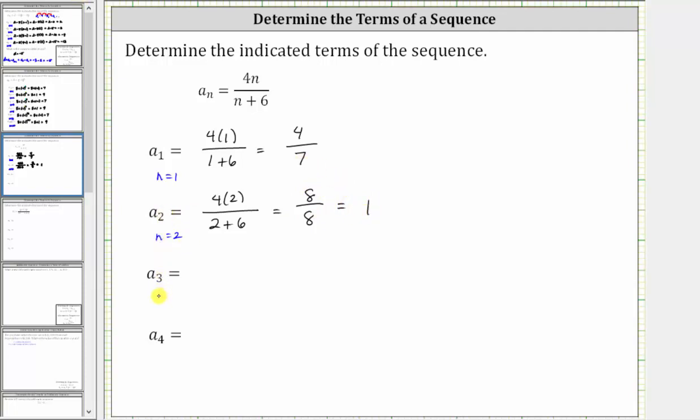To determine a_3, we know n = 3. Substituting 3 for n, a_3 = 4(3)/(3+6). 4 times 3 is 12, and 3 plus 6 is 9.